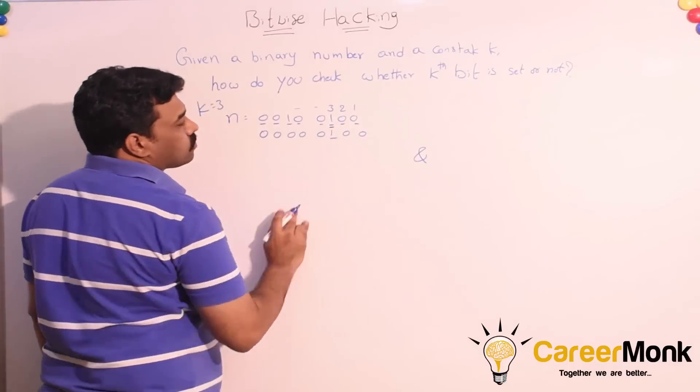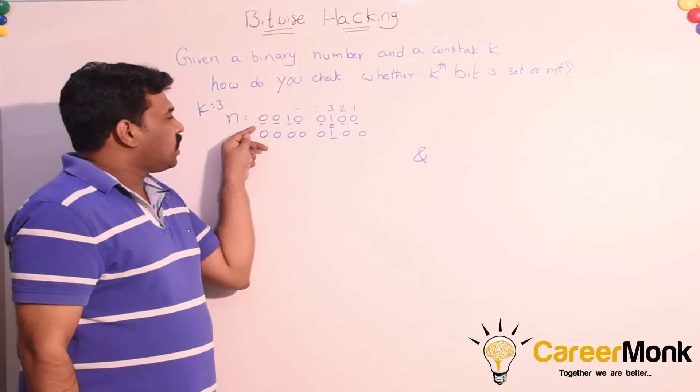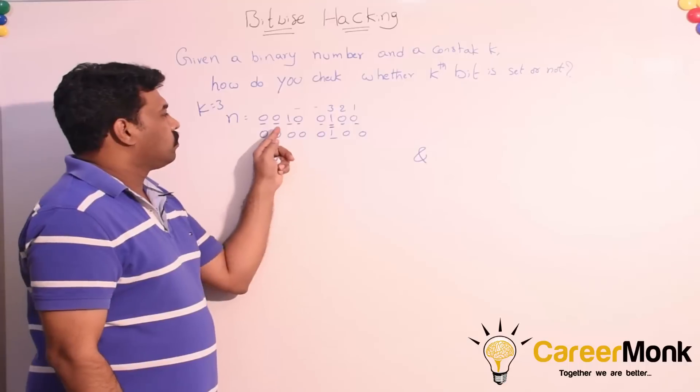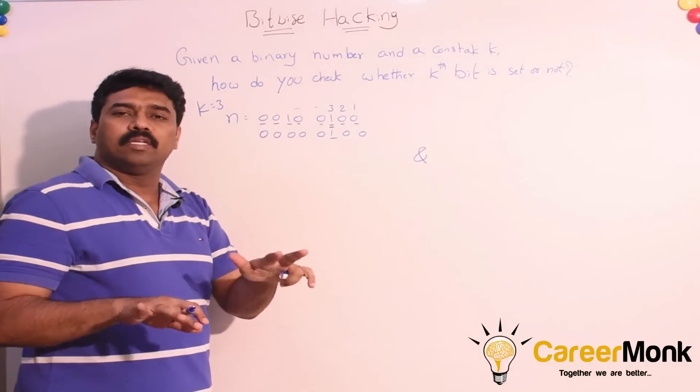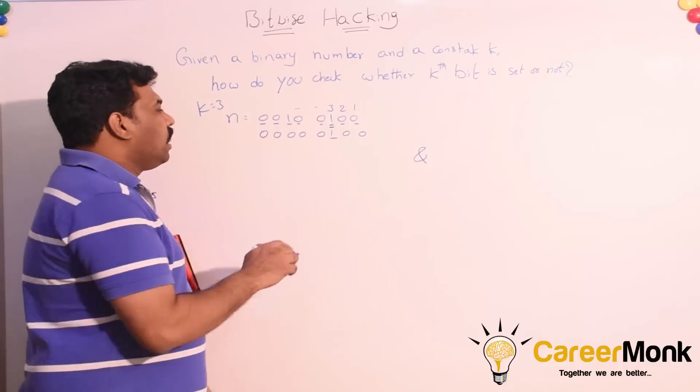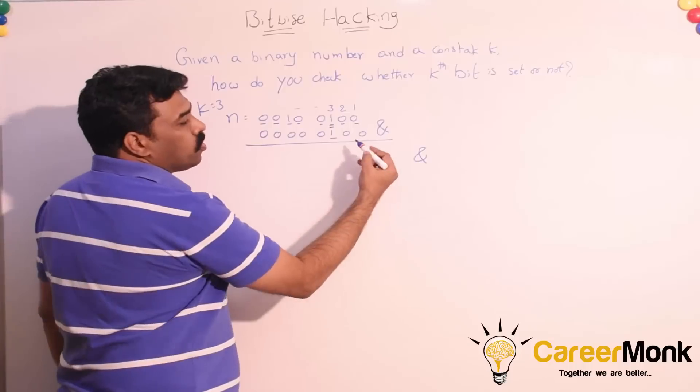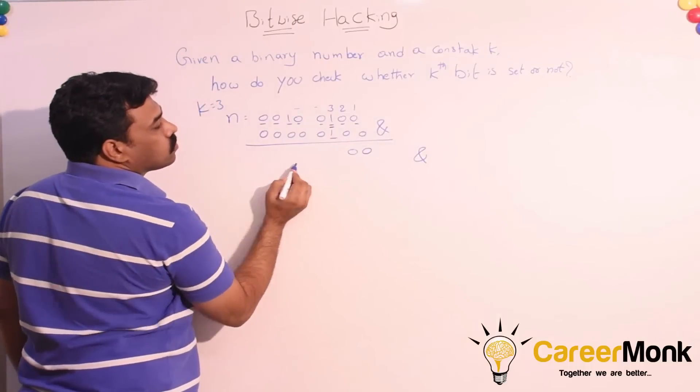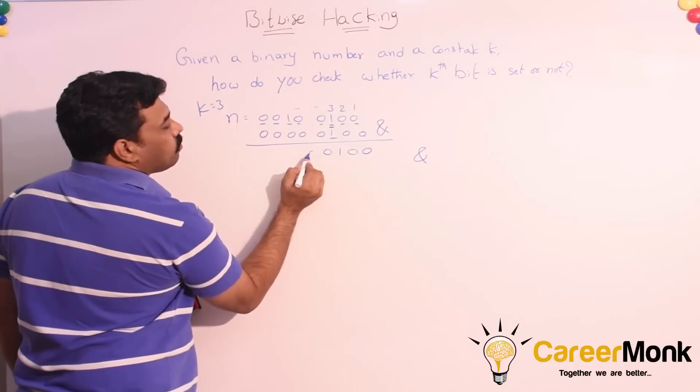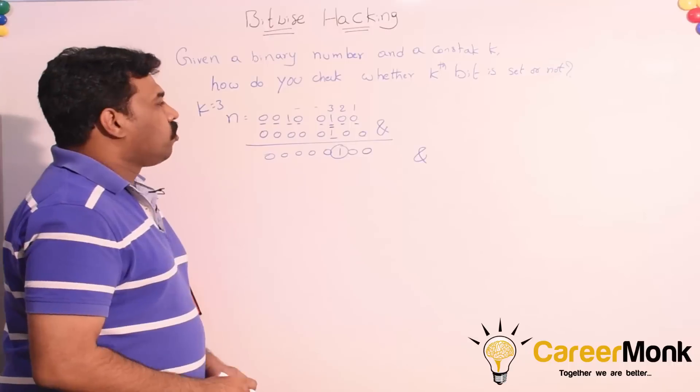And I put 1 here. Zero bitwise AND zero is zero. Actually, except that bit, I am putting all the remaining bits as zeros. And if I perform a bitwise AND operation on these things, what will be the output? One. Remaining all zeros.